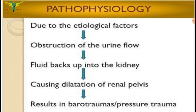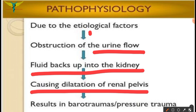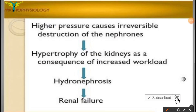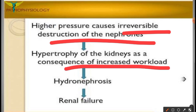These etiological factors — congenital and acquired — cause obstruction of urine flow, by which fluid backs up into the kidney. This causes dilatation of the renal pelvis, resulting in barotrauma and pressure trauma. This higher pressure causes irreversible destruction of the nephrons, leading to hypertrophy of the kidney.